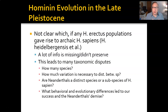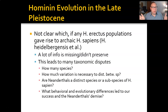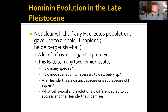Neanderthals pose a problem for us. We now know that they interbred with early Homo sapiens in Europe. So what does that mean? We've always thought of them as a different species, but does that make them a subspecies of Homo sapiens? They have different origins, as we'll see. There are a lot of debates to get into, including why some of these populations survived and others didn't.